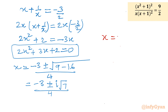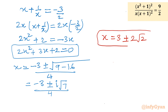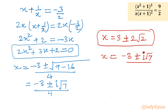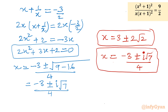So the final answer is: two real solutions x = 3 plus or minus 2√2, and two imaginary solutions x = (-3 plus or minus i√7) over 4. I hope you liked this video. Thank you so much for watching — don't forget to like, share, and subscribe. Bye bye till next video!